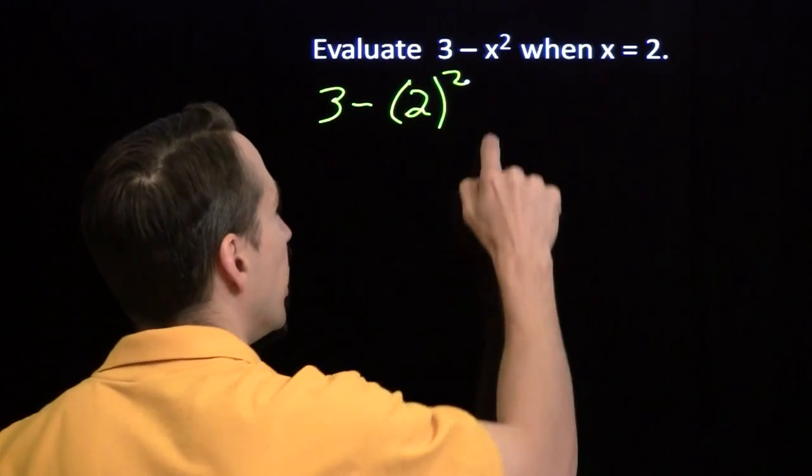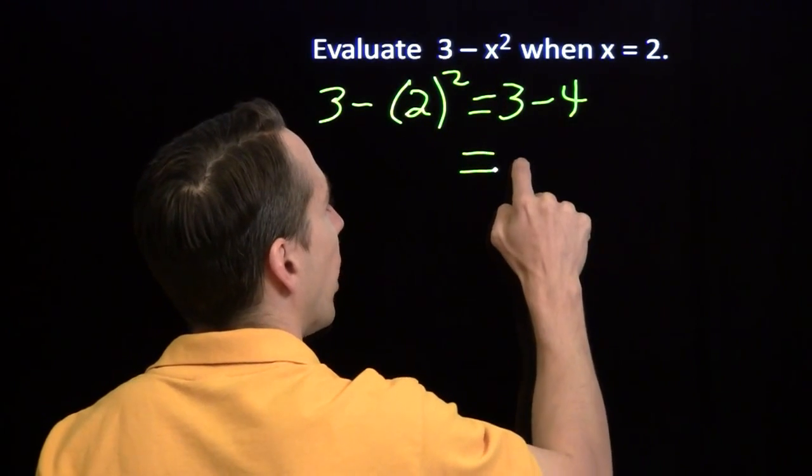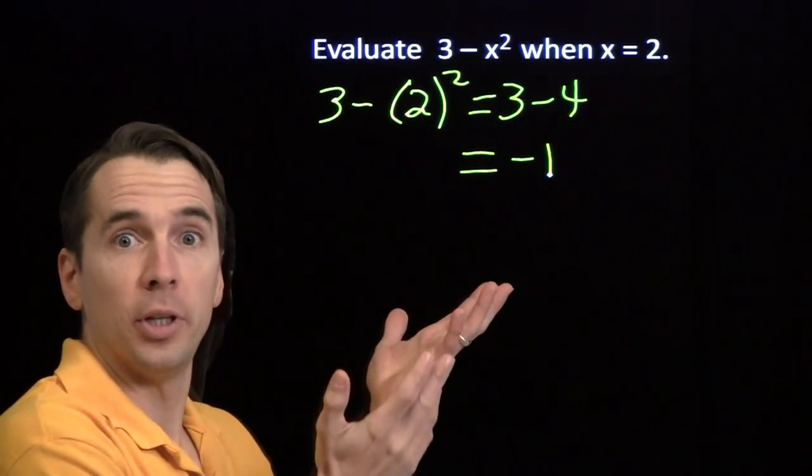Now we have 3 minus 2 squared. 2 squared, of course, is 4. We subtract 4 from 3, we get negative 1. Simple enough.